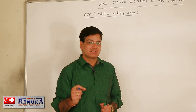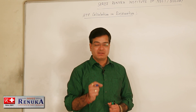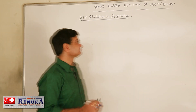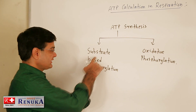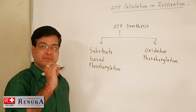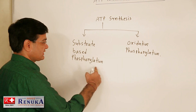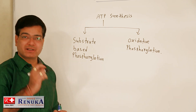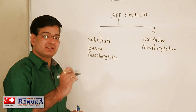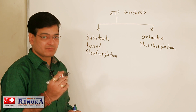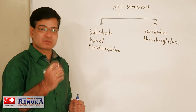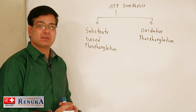ATP is synthesized in two different ways: substrate-based phosphorylation and oxidative phosphorylation. In aerobic respiration, both processes are carried out in the cell. But in anaerobic respiration, ATP is synthesized by substrate-based phosphorylation only, because mitochondria has no role in anaerobic respiration and that is why oxidative phosphorylation is not possible.